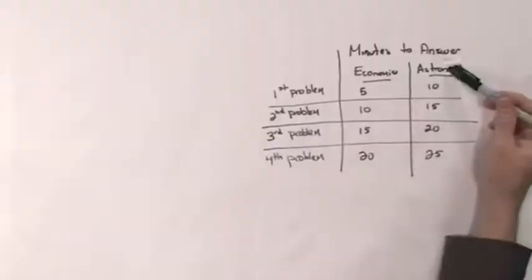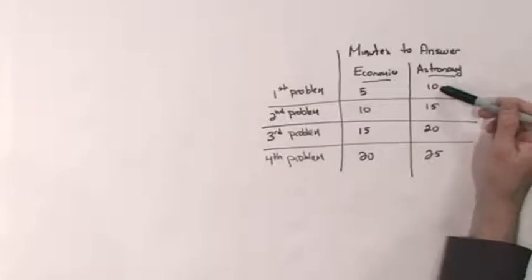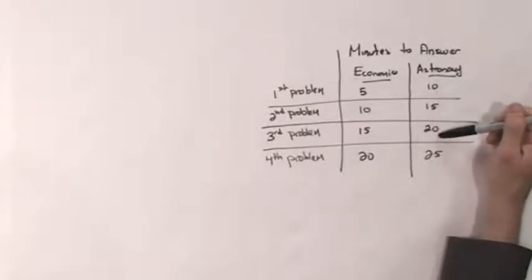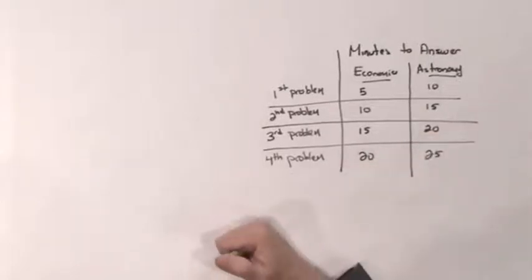Every problem is not the same. For astronomy, the times are generally longer: 10 minutes for the first problem, 15 for the second, 20 for the third, and 25 for the fourth. We'll assume for this hypothetical example that astronomy is harder than economics.